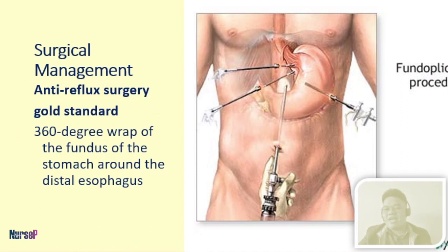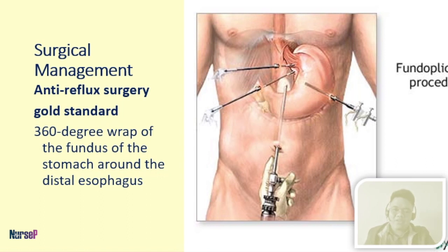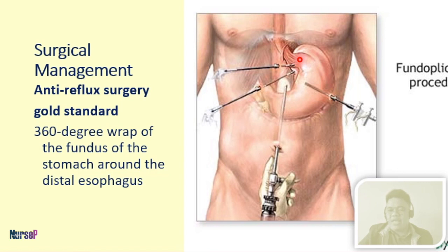Then we have surgical management. The surgical management for GERD is what we refer to as Nissen fundoplication, which is considered an anti-reflux surgery and is the gold standard for managing GERD to strengthen the LES. It involves a 360-degree wrap of the fundus of the stomach around the distal esophagus — specifically the LES — which is expected to tighten and strengthen the lower esophageal sphincter.